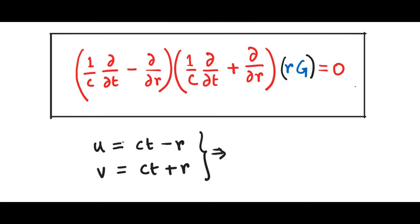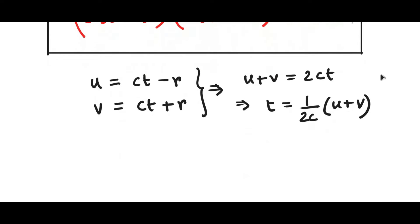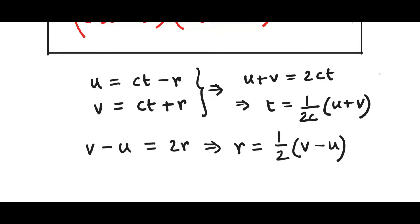To transform this equation in the inverse direction, we add u plus v and we get 2ct, so from this we can get t equals 1 over 2c times (u plus v). And then of course we can do the same for r: if we take v minus u we get twice r, and from this we get r equals half (v minus u).